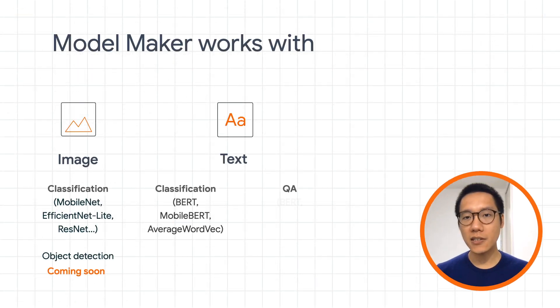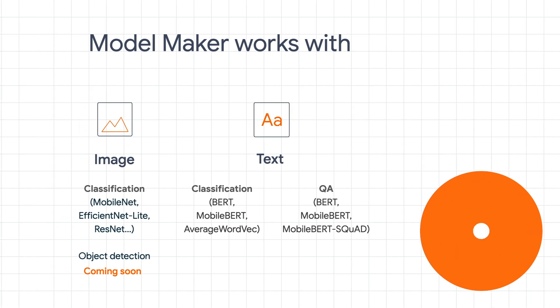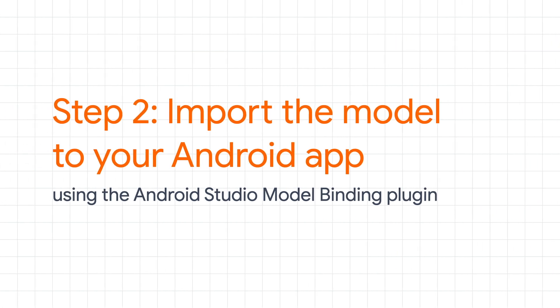In this example we've trained an image classification model, but Model Maker also supports other use cases. For example, text classification and question answering. There are new use cases such as object detection coming soon. Once you already have a model, you can import it to an Android app with just a few clicks using the Android Studio plugin.